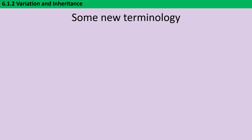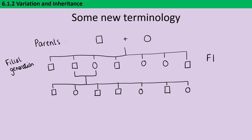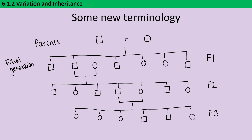Before we move on to codominance and sex-linked traits, we're going to look at one more example, for which we need some more new vocabulary. As part of a breeding program, two parents are bred together and have a series of offspring — these are referred to as the filial generation, simplified as F1. In a breeding program those offspring may then be bred together; the offspring of that cross are the F2 generation, and the next would be F3. In A-level exams you'd really expect to see F1, F2, and F3.